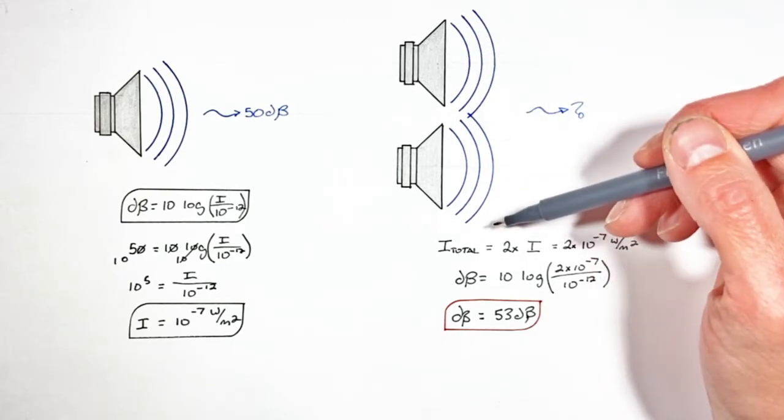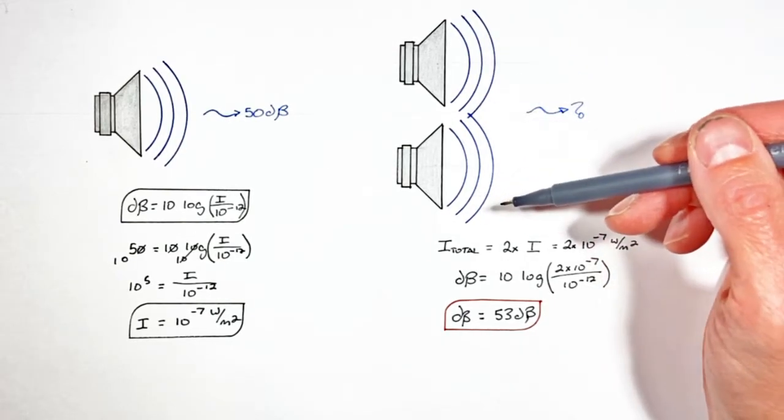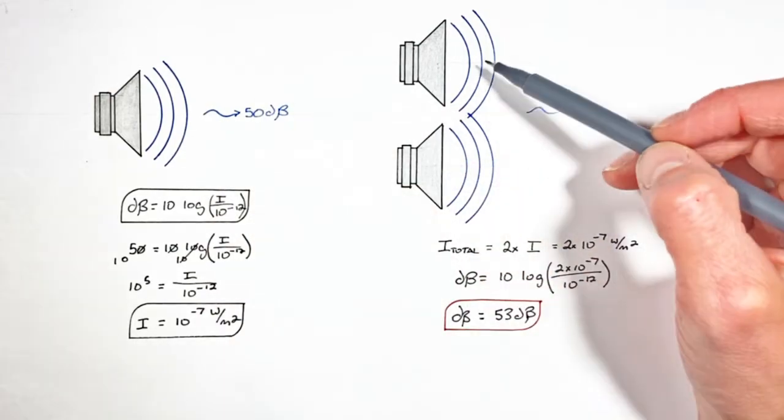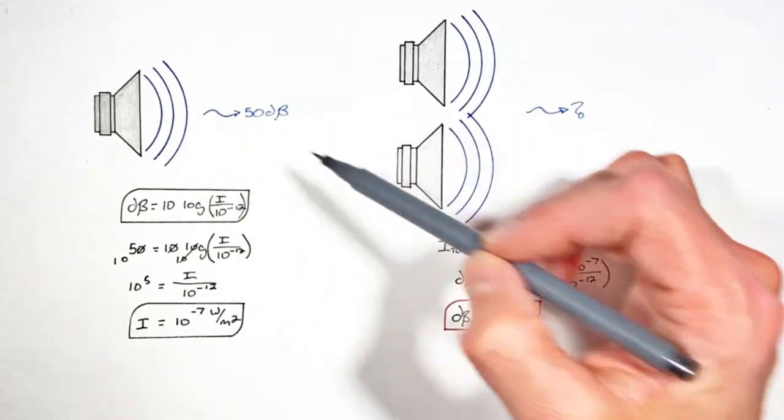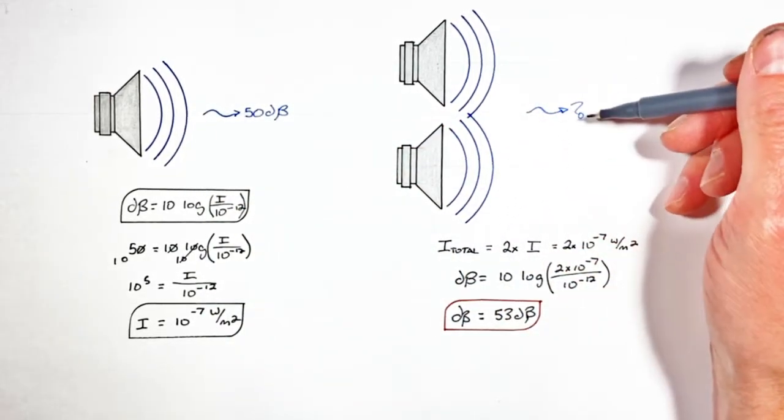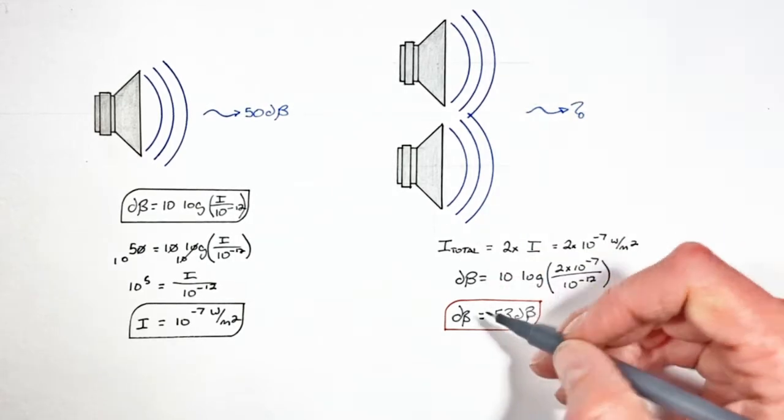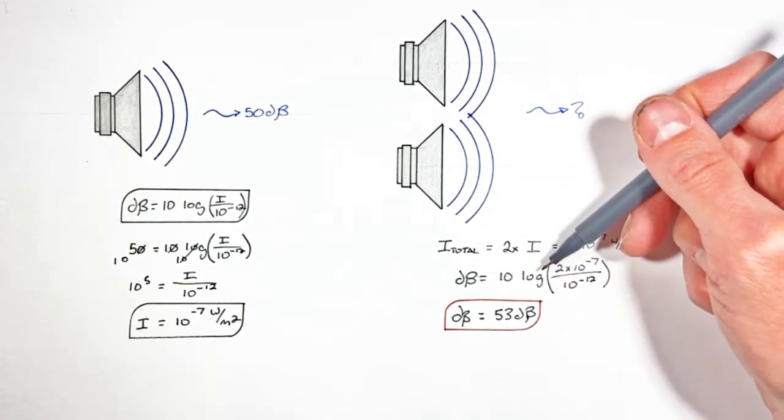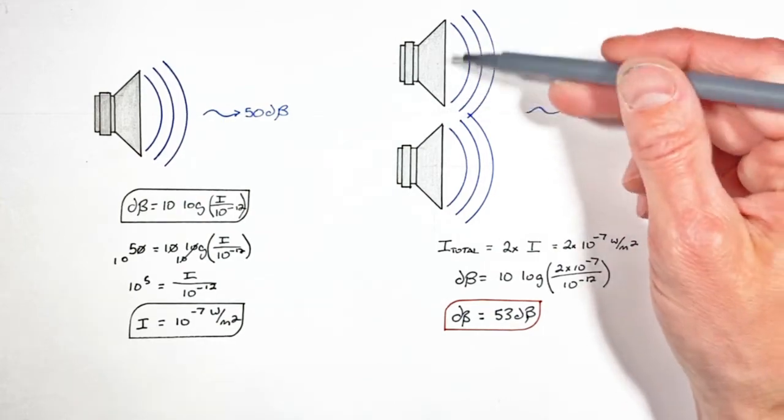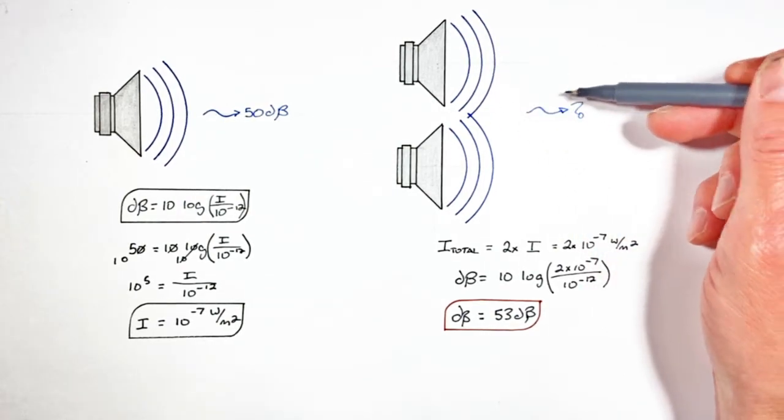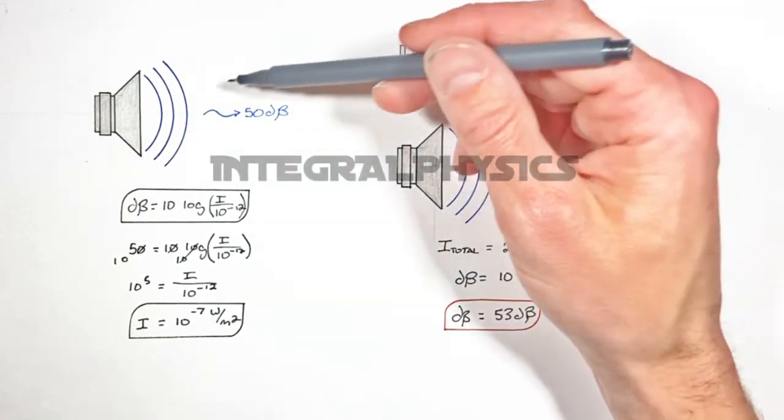And that's a bit of a counterintuitive result. You'd think that by doubling the number of speakers compared to this original situation, you'd get much more sound out of it. But in reality, because decibels are based on a nonlinear scale, the result is adding a second speaker doesn't really make the sound all that much louder.